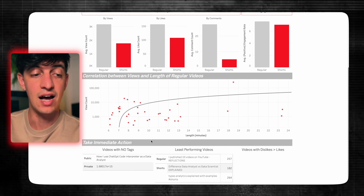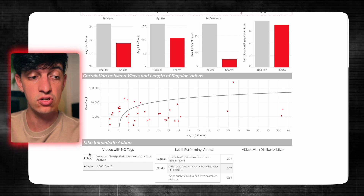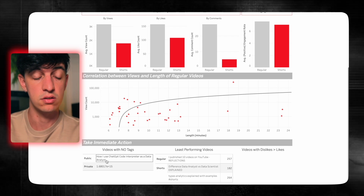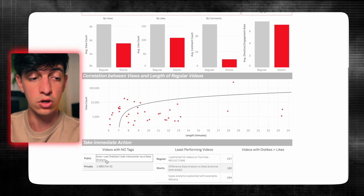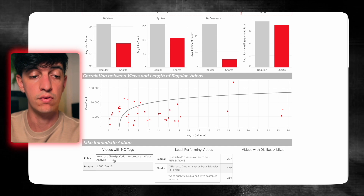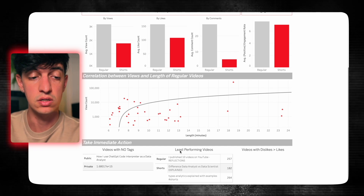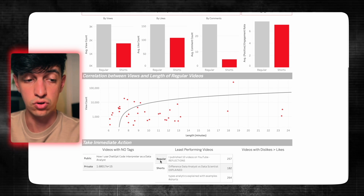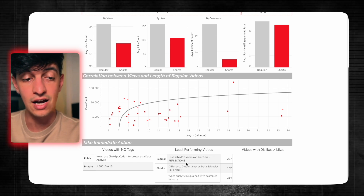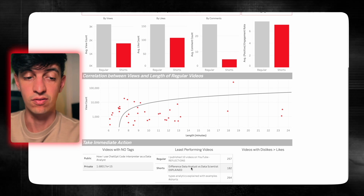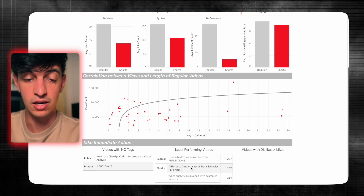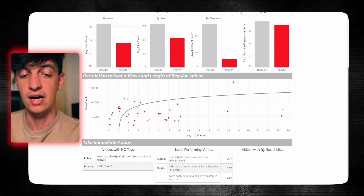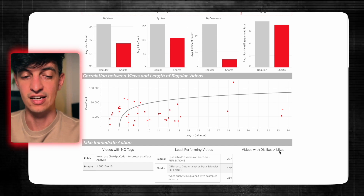In the 'Take Immediate Action' section, it's interesting to see that I have one public video with no tags — so I definitely need to add tags to that video. The least performing videos section gives an indication of which regular videos and shorts are underperforming, so I might change the titles, the thumbnails, or even remove them from the channel. Fortunately, there are no videos with more dislikes than likes — so that's a good sign.